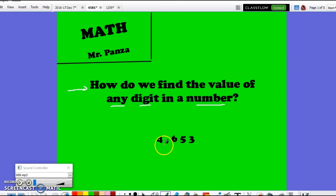The value of any digit in the number 4635 can be found out by using a four step process that I will teach you throughout this video.